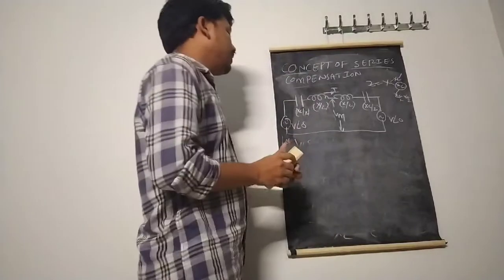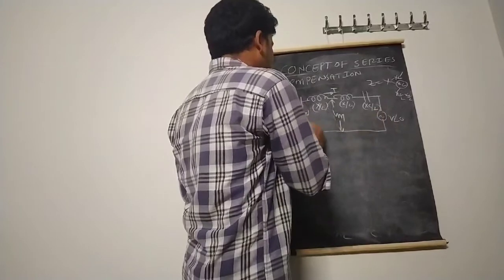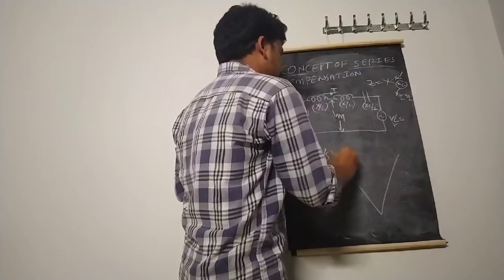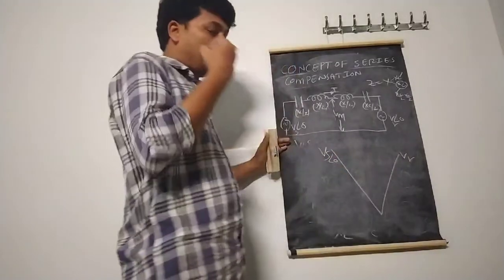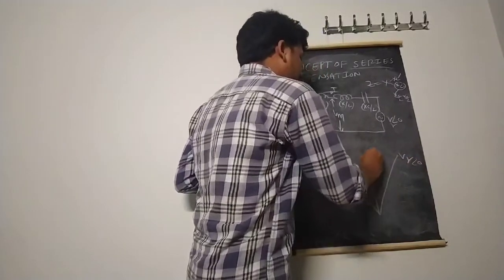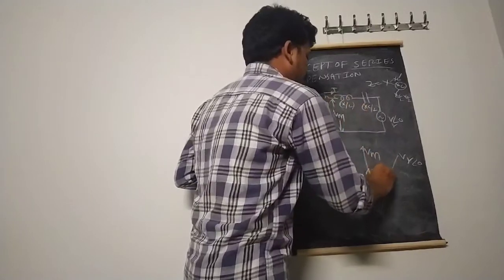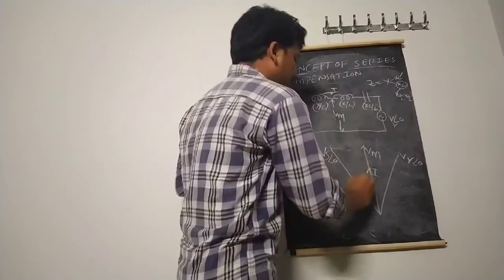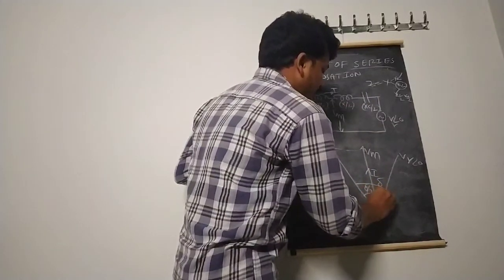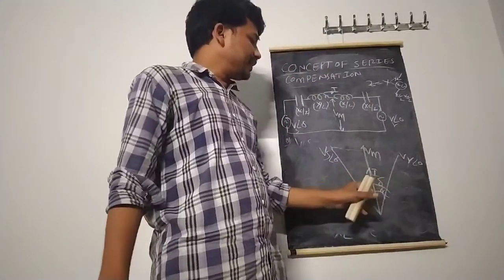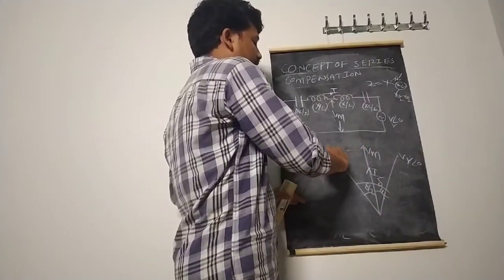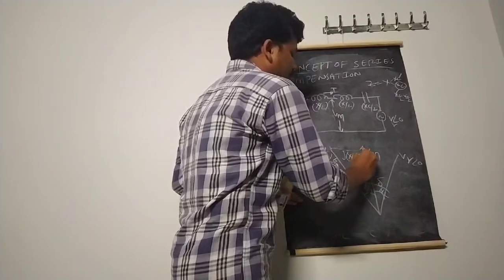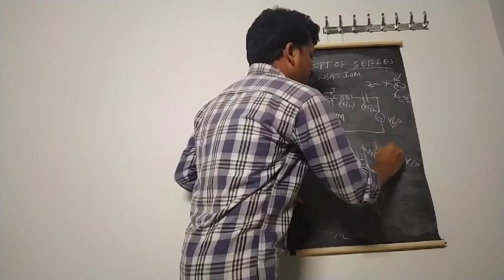In the two-machine system phasor diagram, Vs is the sending end and Vr is the receiving end. The angle existing between Vs and Vr is δ. The midpoint voltage Vm bisects this angle, so the angle from Vs to Vm is δ/2 and from Vm to Vr is δ/2. The current I flows through the system. The voltage drop from sending end to midpoint, without considering capacitance, is j(X/2)·I. Similarly, from midpoint to receiving end: j(X/2)·I. The total reactance voltage across the line is 2·(Vx/2) = Vx.